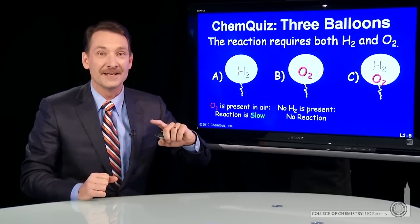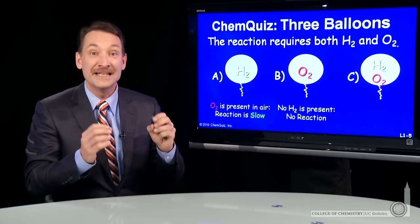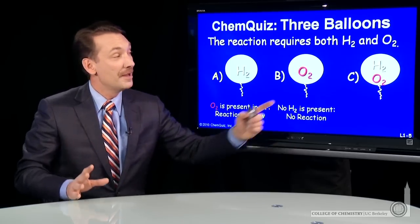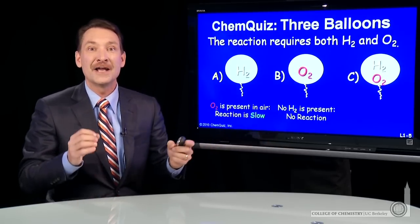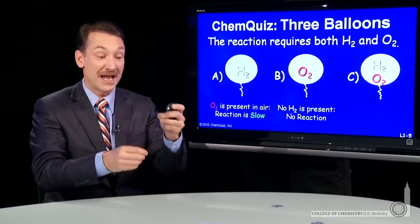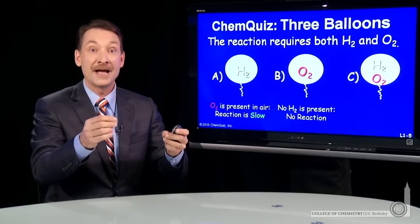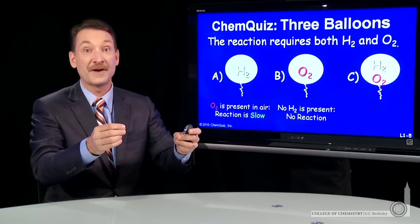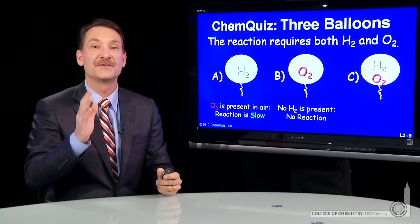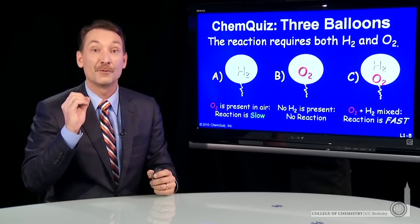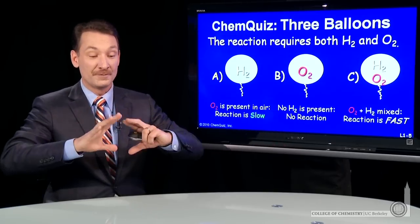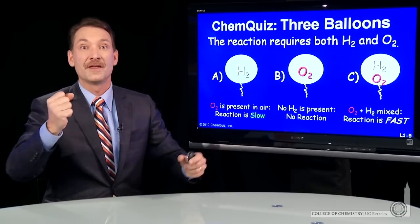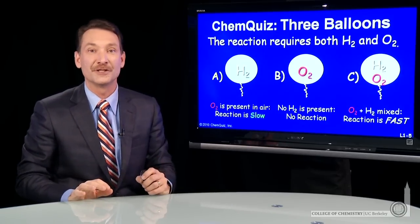The third case, I have hydrogen and oxygen intimately mixed together. In this case, when the flame comes through the balloon, hydrogen and oxygen are primed to react. They're very close to each other. A hydrogen doesn't have to go very far to find an oxygen. The reaction occurs very rapidly. And it's the rapid reaction that forms the concussive force, the sharp bang, that you get out of this explosion.